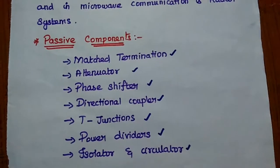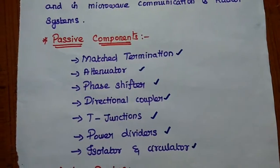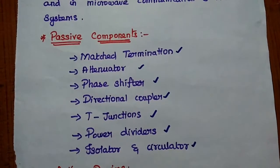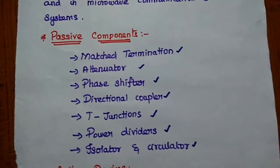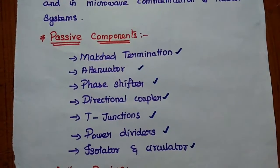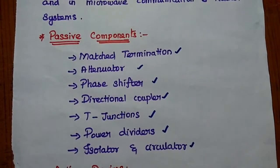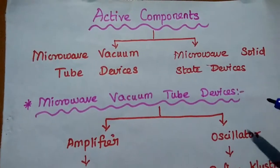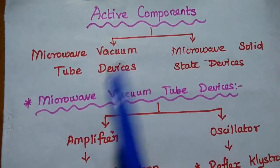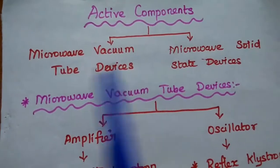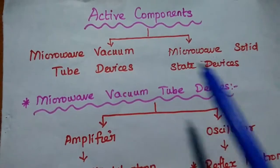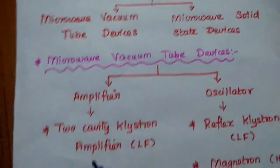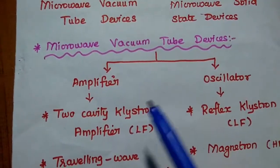Passive components are used as part of a system — they cannot generate or perform any operation on their own; they need an input or power supply to activate. Active components have two types: microwave vacuum tube devices and microwave solid state devices. Microwave vacuum tube devices are further divided into two categories: amplifiers and oscillators.